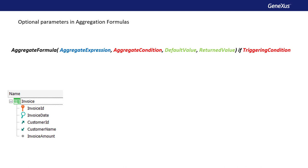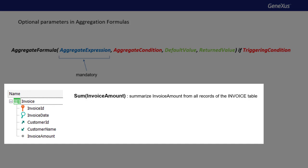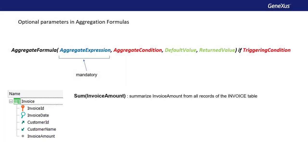Let's look at the parameters of an aggregation formula and their roles. Aggregation formulas have a first mandatory parameter, that's the aggregation expression, which establishes the table that will be run through by the formula. It's recommended that this attribute not be a key, to avoid possible ambiguities when GeneXus determines the table to be navigated, especially if in the other parts of the formula there are no other attributes that allow determining the uniqueness of the table.